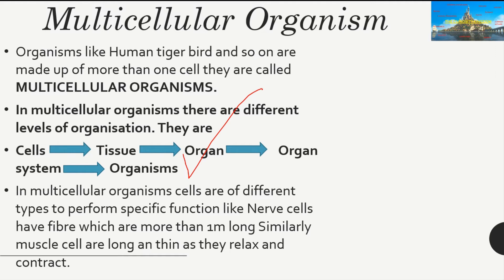In a multicellular organism, one particular cell does not perform all life functions. Different cells each have a specific function and are designed accordingly. For example, nerve cells have fibers more than one meter long to transmit signals, muscle cells are long and thin because they keep relaxing and contracting, and white blood cells can change shape to move through intercellular spaces and kill pathogens.